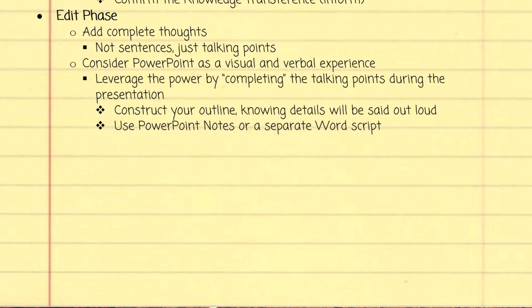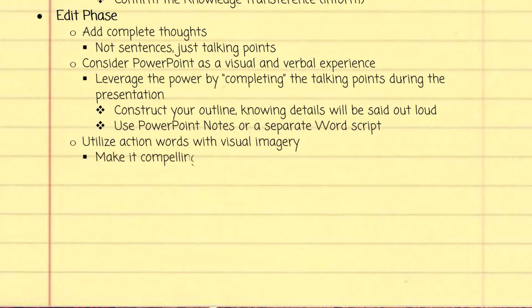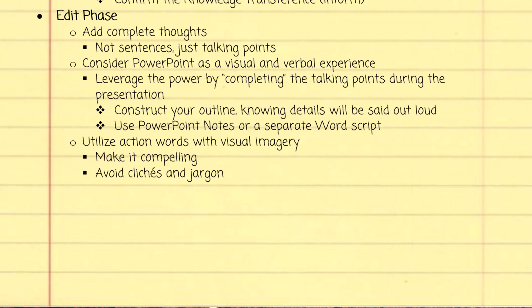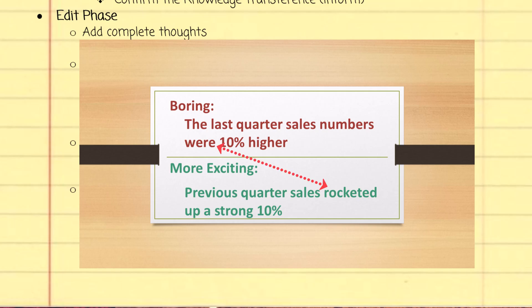Let's move to the specifics of wordsmithing the outline. Word choice. Make sure you're utilizing action words and better yet individual imagery to make the whole presentation come alive. Look at this example. Here's the first boring version: the last quarter sale numbers were 10% higher. But now how about this? Previous quarter sales rocketed up a strong 10%. Note how we changed from the passive voice to active and we used the qualifier word of strong.